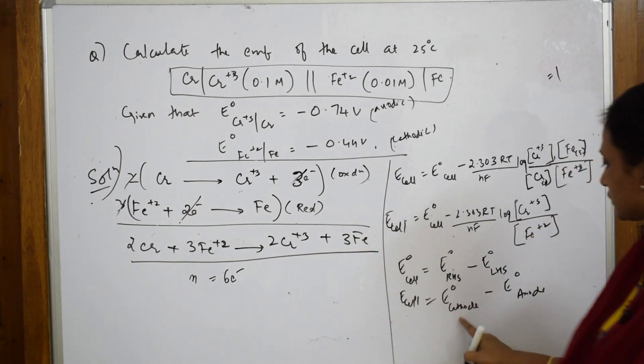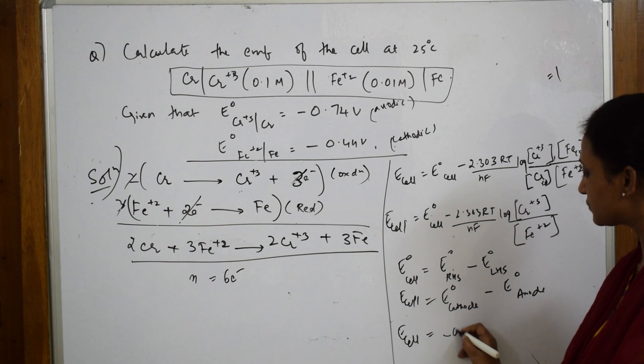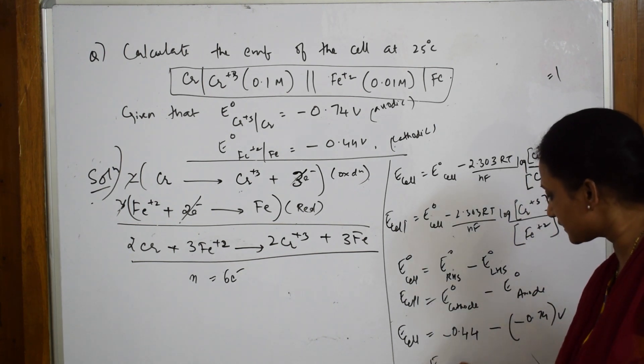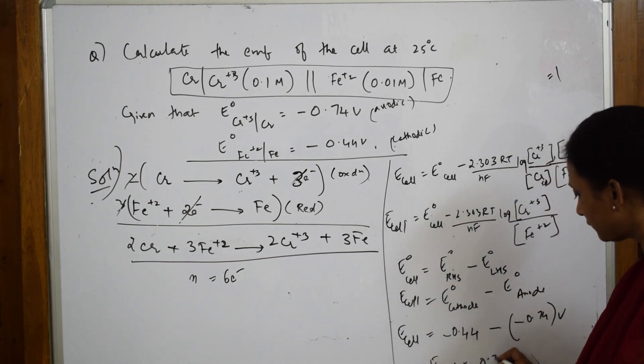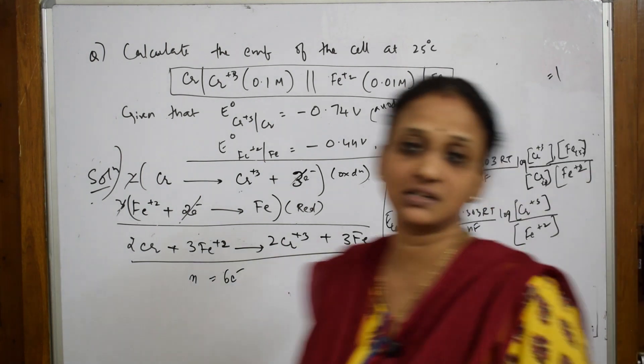The cathodic value is -0.44V and the anode is -0.74V. So E°_cell = -0.44 - (-0.74) = 0.30 volts.